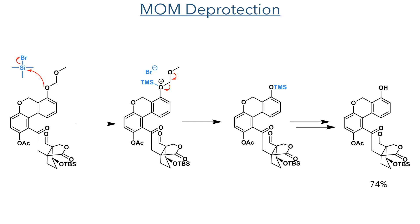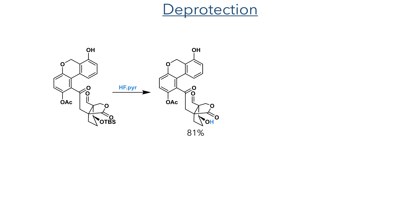In the next step, the MOM group was deprotected using TMS bromide. The phenolic oxygen attacks TMS bromide, triggering cleavage of the MOM group and producing a silyl ether. This is cleaved upon workup to generate the free phenol in a 74% yield. In the following step, the TBS group was removed using HF and pyridine, and then the phenol was oxidised to a quinone.